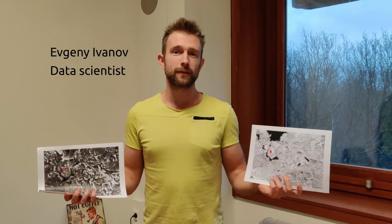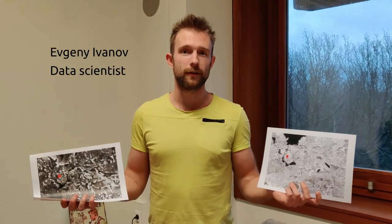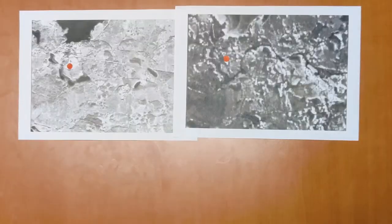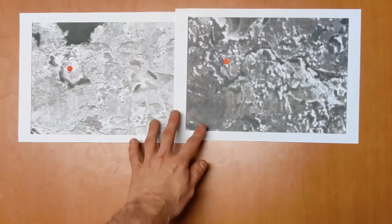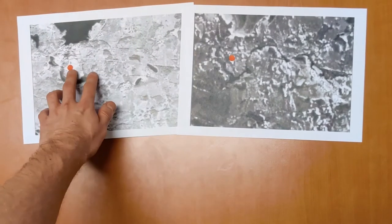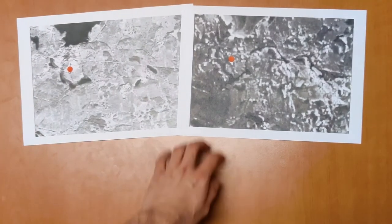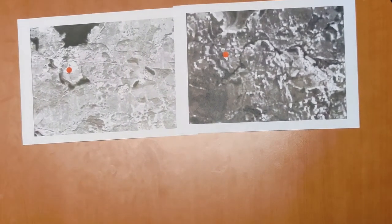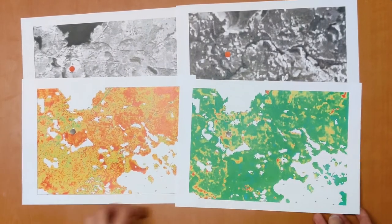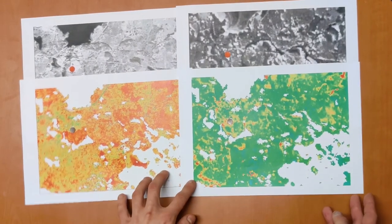Our product uses raw satellite data. Here you see the raw satellite images. The red dot represents the mine. Here you see no contamination at all. If you combine raw satellite images in a certain way, we get the contaminant maps.